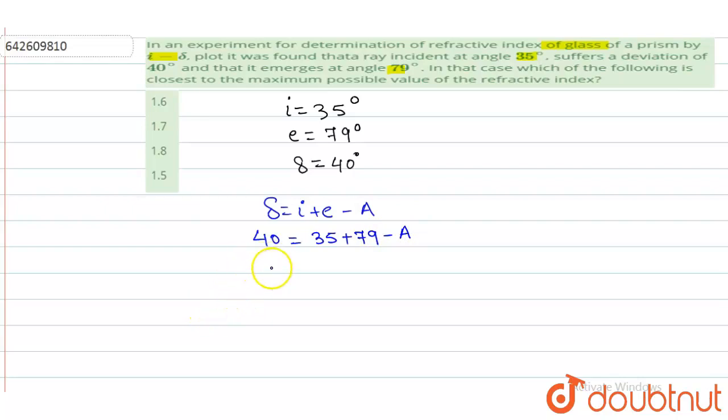So I can solve it for A. This is 35 plus 79 minus A equals 40. On solving here, angle of prism A comes out to be 114 minus 40, that is 74 degrees.